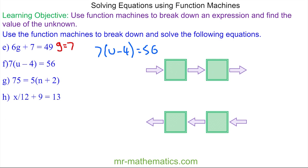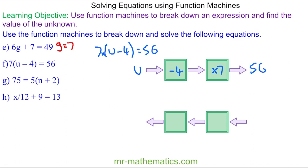For question f, we could expand the brackets, which would be perfectly valid, or we can do what's in the brackets first using the order of operations. So u is our input, then we're taking away 4 — take away 4 goes here. Once we have taken 4 away from u, we multiply the result by 7 — times 7 goes here — and this equals 56. Going the other way: 56 divided by 7, then add 4.